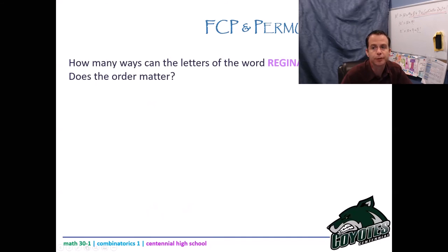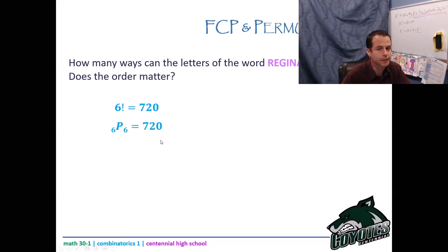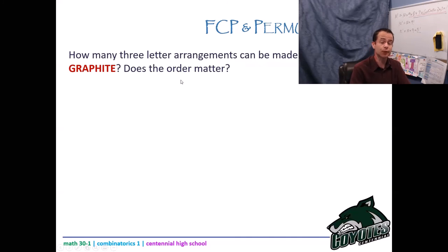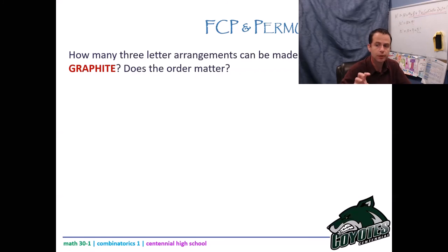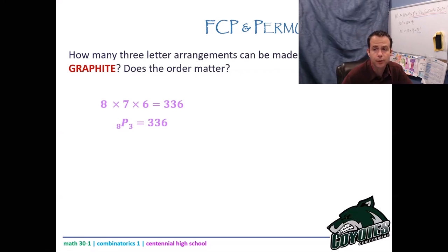How many ways can the letters of the word Regina be arranged? Does order matter? Yes — REG is different from GER. There are six letters in Regina and I want to arrange them all: 6! = 720. Or 6P6, also 720. How many three-letter arrangements can be made from the word Graphite? Order matters — GRA is different from ARG. There are eight letters; I want three of them: 8P3, or equivalently 8×7×6 = 336.